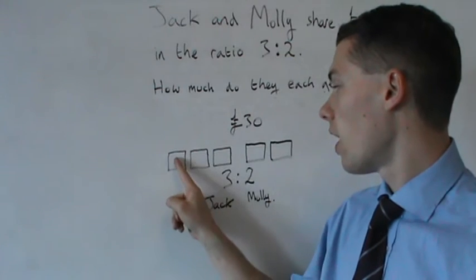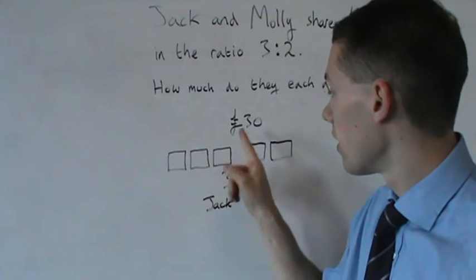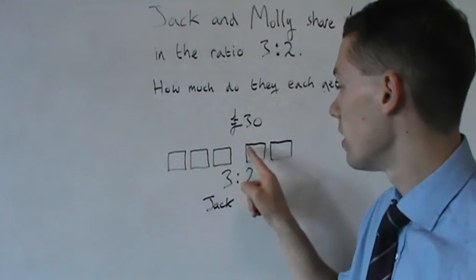So I've got 5 boxes now: 1, 2, 3, 4, 5. And I'm sharing my £30 equally between the 5 boxes.